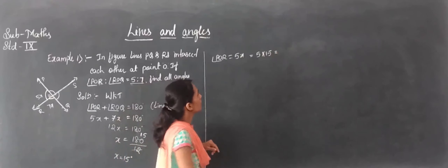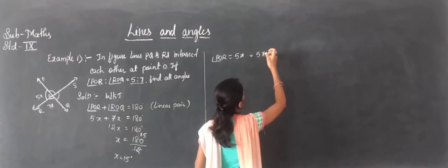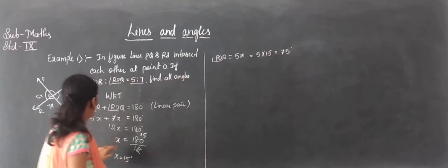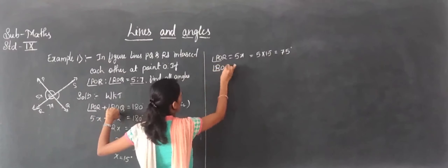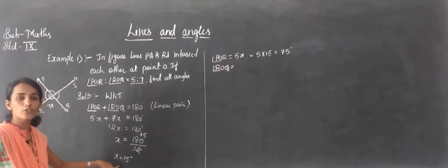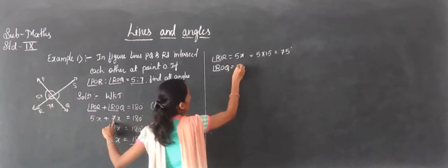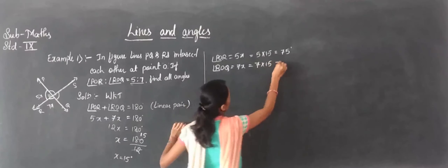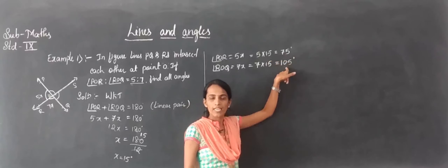Angle POR equals 5 into 15, which is 75 degrees. Then angle ROQ equals 7x, which is 7 into 15, equals 105 degrees. So 75 plus 105 equals 180 degrees, confirming the linear pair.